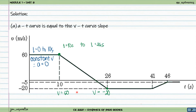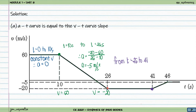The slope from 10 to 26 seconds is given by the change in velocity over change in time: negative 20 minus 60 divided by 26 minus 10. The acceleration is equal to negative 5 meters per second squared. Then for time 26 to 41 seconds, it is again a horizontal line, meaning velocity is constant, so acceleration is equal to zero.